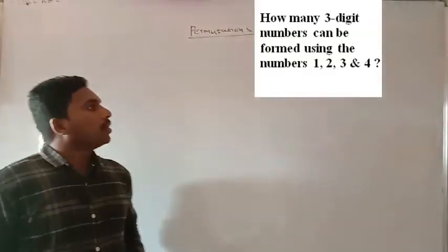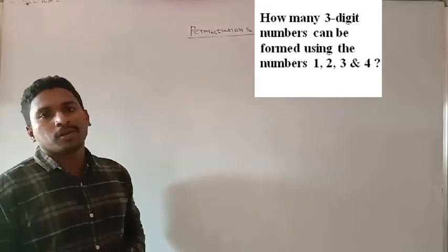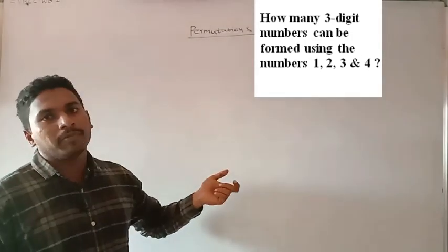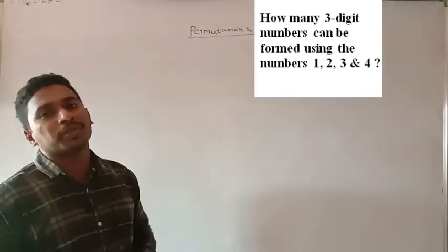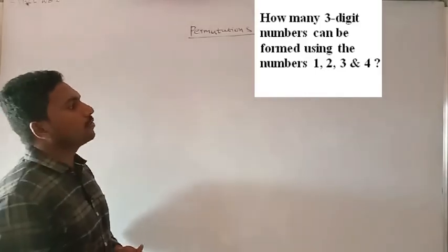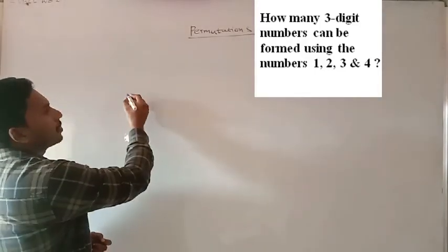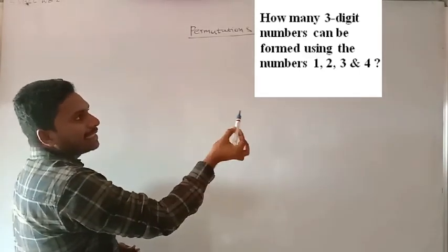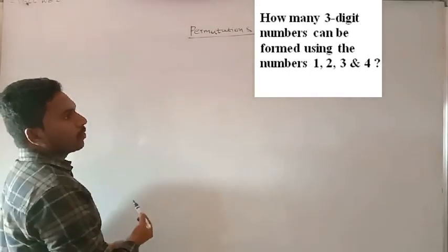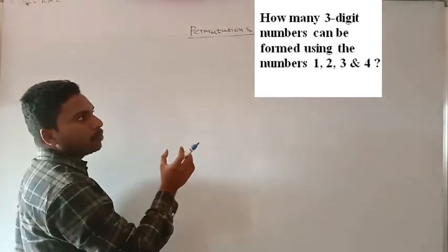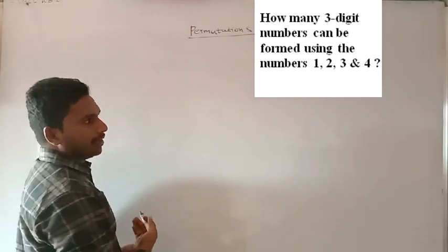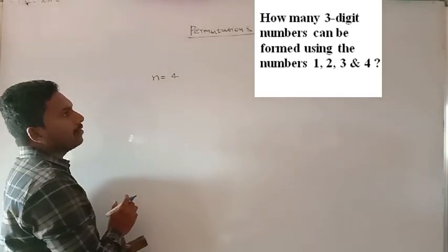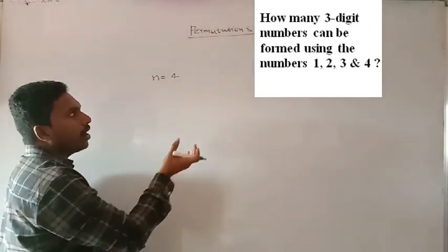We'll start with numbers — specifically the non-zero type. This is the first basic type in permutation. The problem asks: how many three-digit numbers can be formed using 1, 2, 3, and 4? So N is 4 because four numbers are given, and out of those we have to pick three.